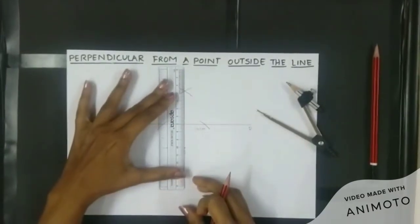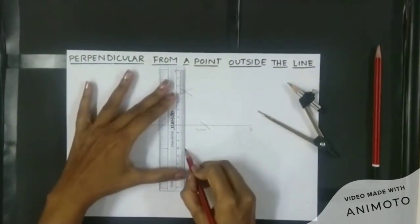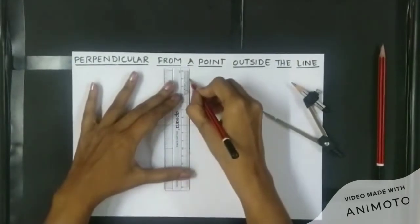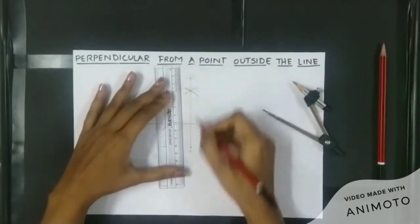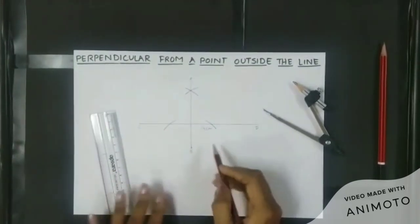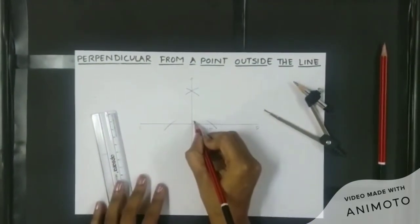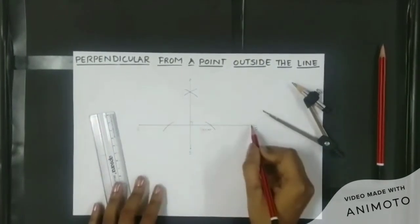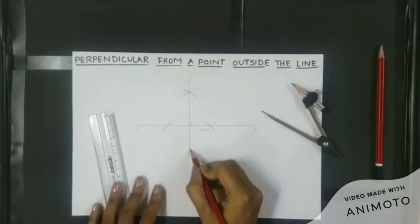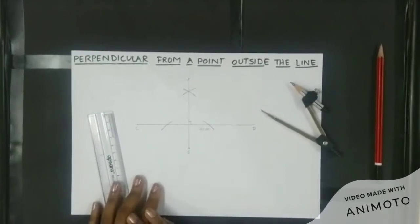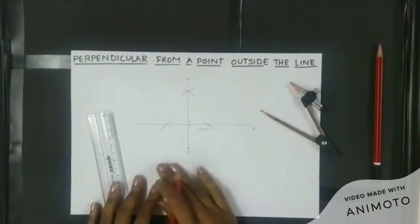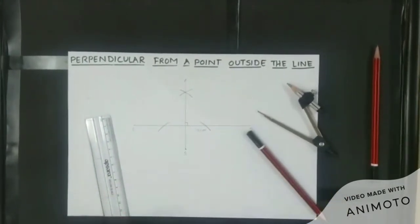This ray which we have drawn on the line segment CD is perpendicular to the line segment CD from the point which was outside the line segment, that point is S. This is how we make this construction.